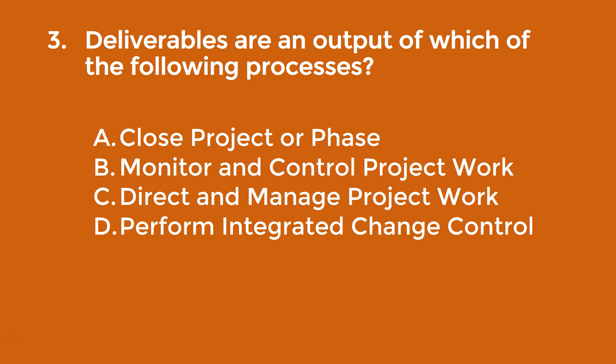Question three: deliverables are an output of which of the following processes? The correct answer is C — direct and manage project work. That's actually when we get the work done and thus produce the project deliverables.